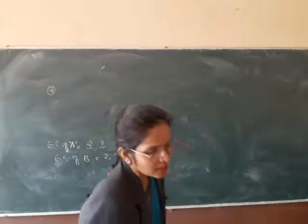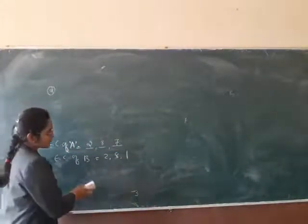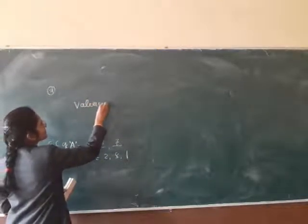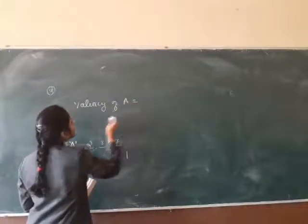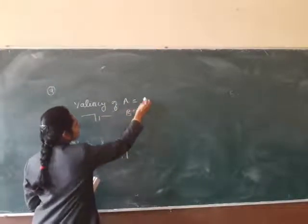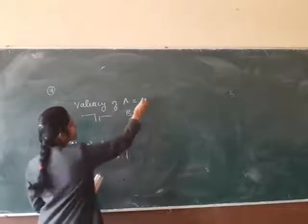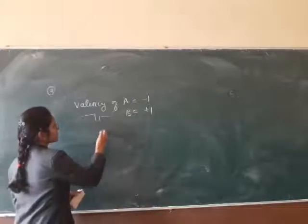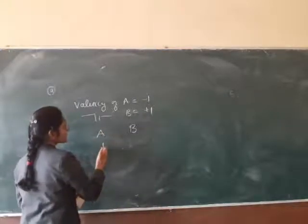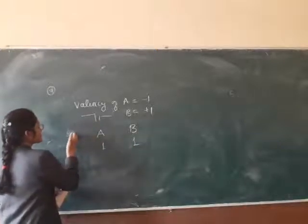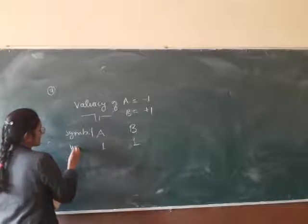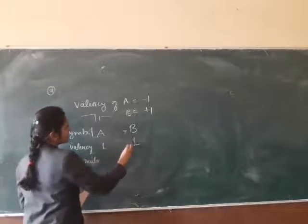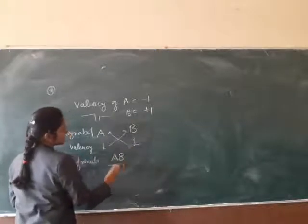Part D: Write the chemical formula of the compound. Valency of A is 1 (it gains one electron, so it is -1) and valency of B is also 1 (+1). Since both valencies are equal, they cancel out. So the formula of the compound formed when A and B combine is AB।